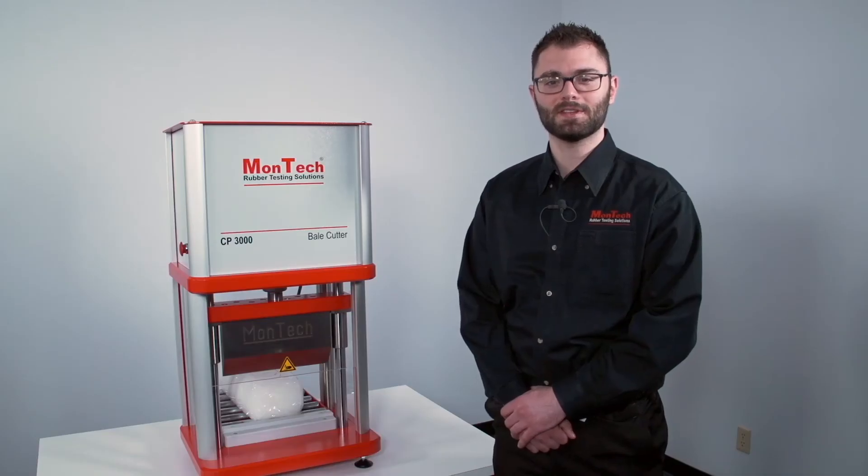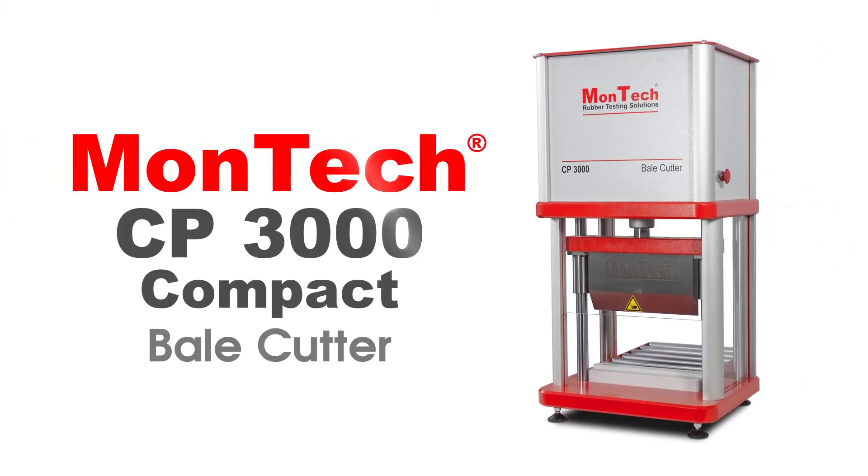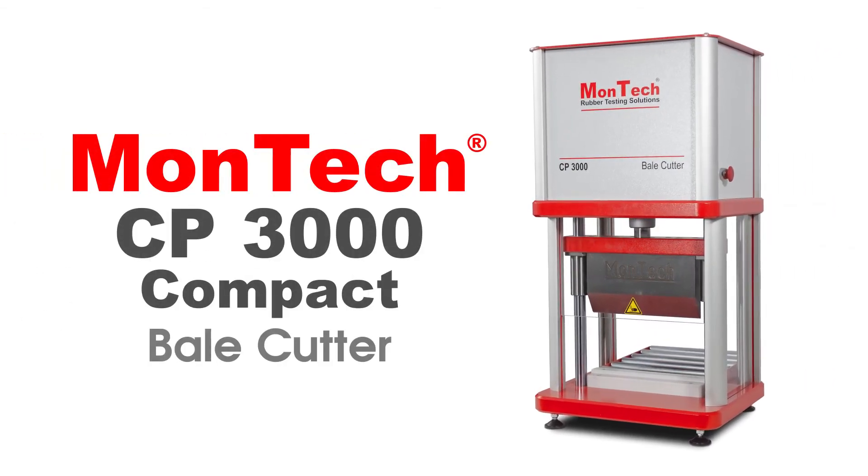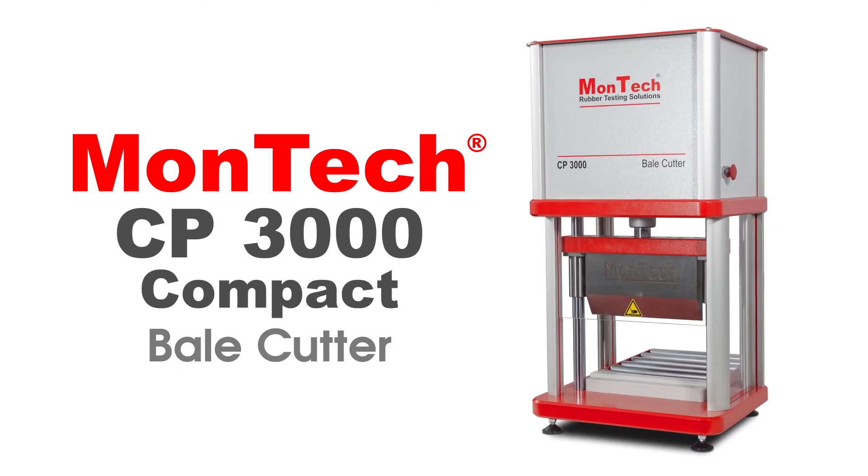For high volume operations, semi-automated and fully automated material feeding options are available to streamline bale cutting and production testing. MonTech's CP3000 Compact Bale Cutter is the perfect choice for cutting rubber and polymer bales for testing, mixing, and compounding when space is limited. Contact us or visit the link in the description to receive a brochure or quotation.